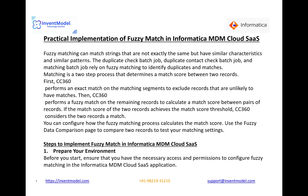Matching is a two-step process. First, we identify the match score on which the matching would be done. Second, there are certain rules that help find matching segments to exclude records that are unlikely to have matches. If the match score of two records is achieved, the match is successful. If they do not receive any match score, the match is assumed to be unsuccessful.